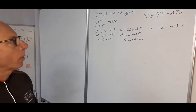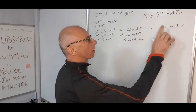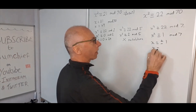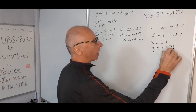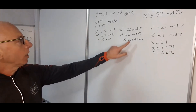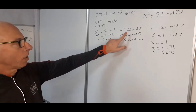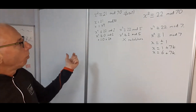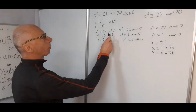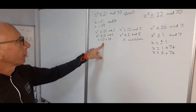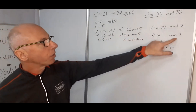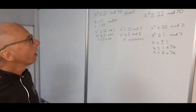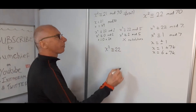For mod 7: 22 mod 7 equals 1, so x squared congruent with 1 mod 7, giving x equals 1 or x equals 6 plus 7k. However, since there is no solution mod 5, we cannot complete the Chinese Remainder Theorem for all three factors. Using only mod 2 and mod 7 would only yield a solution mod 14, not mod 70. Therefore x squared congruent with 22 mod 70 has no solutions.